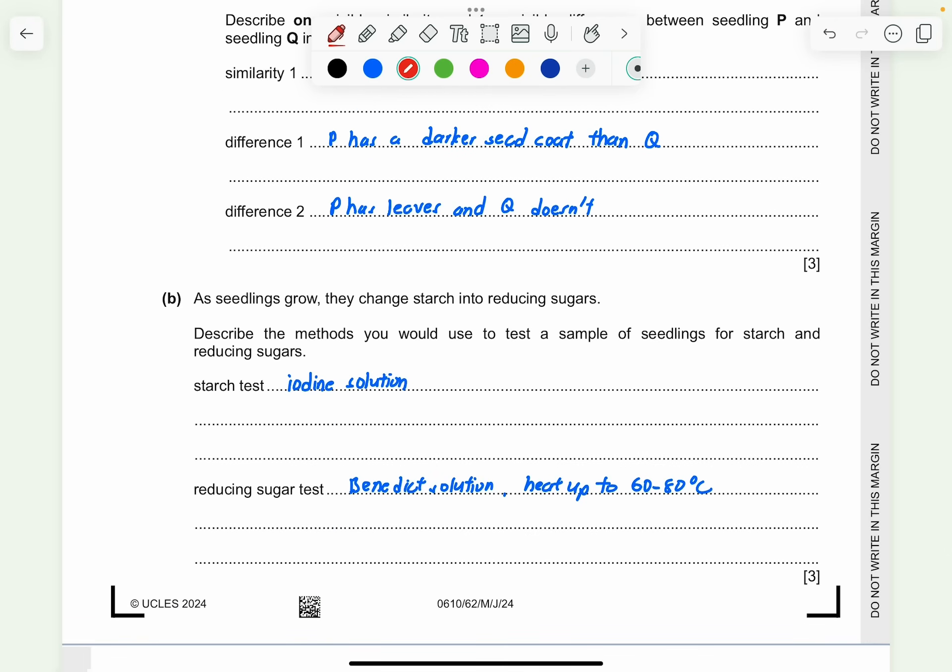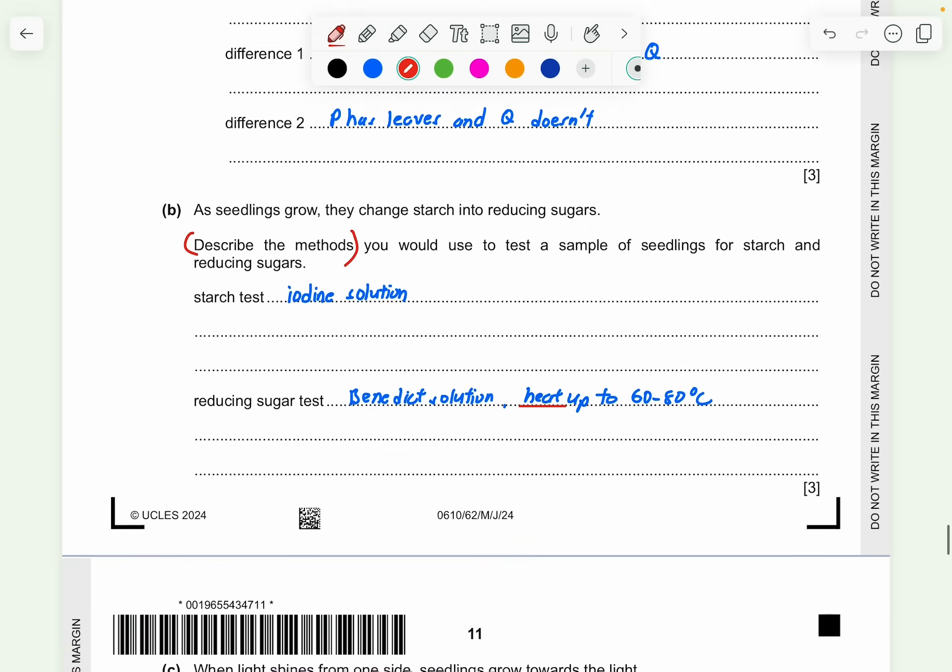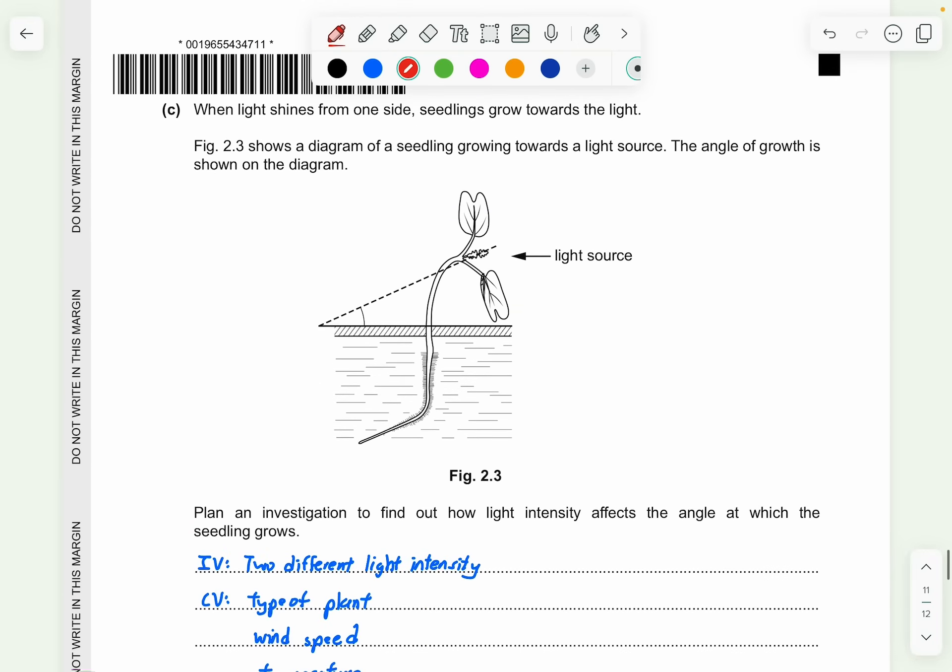Part B. As seedling grows, they change starch into reducing sugar. Describe the methods you will use to test the sample of seedlings for starch and reducing sugar. For starch test, you just add iodine solution and then you can observe the result, whether it turns to blue-black later on. Reducing sugar test, you use Benedict's solution and you make sure you have the term heat because they want you to describe the methods. So for Benedict or the reducing sugar test, you must have the term heat. So this is how you're going to get your marks.